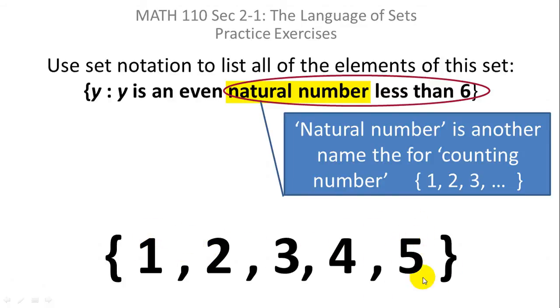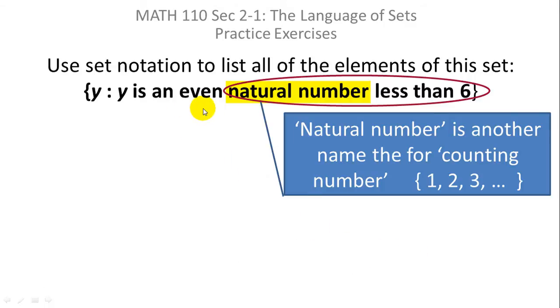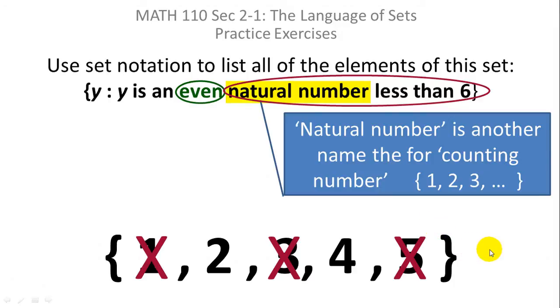Not less than or equal to six but strictly less than six. But we're not looking at the word even yet. The even natural numbers are the ones that only include evens so you have to eliminate one, three and five.